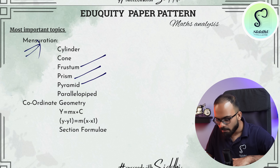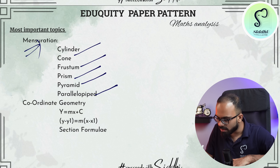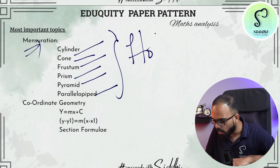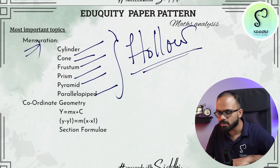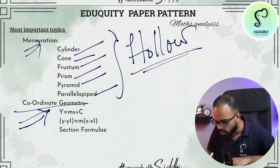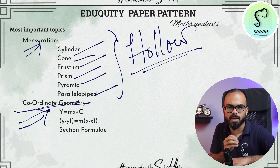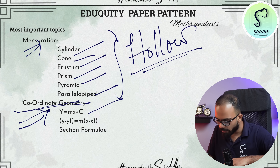In mensuration, make sure your preparation is strong — good quality, doable, and conceptual questions are being asked. First practice frustum, prism, pyramid, and parallelepiped. Then practice cylinder and cone, especially hollow shapes — hollow cylinder and hollow sphere — as these are preferred when the examiner wants to set higher standard questions. Then practice coordinate geometry, where questions are of basic standard. Focus on y = mx + c and other formulae including section formulae.